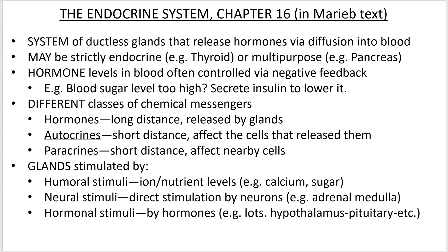Glands can be completely endocrine, or they can have both exocrine and endocrine function, or they can be a brain structure that produces hormones — your heart even has an endocrine function. Hormone levels are generally controlled by negative feedback, meaning if they get too high you do something to drop them back down, and if they get too low you do something to raise them back up. Blood sugar level is monitored by the endocrine system: if it gets too high, you secrete insulin to lower it; if too low, you secrete another hormone to raise it — keeping things homeostatically balanced.